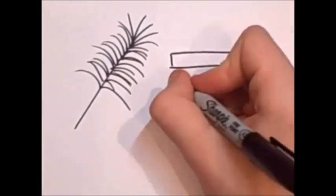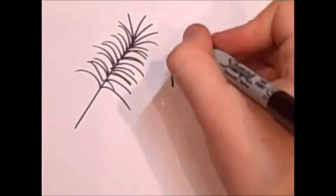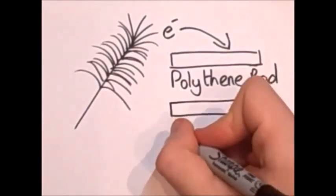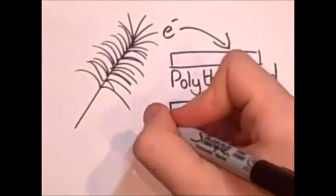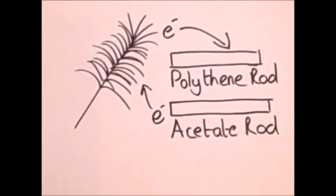For example, a duster. If a duster is rubbed against a polythene rod, all the electrons move from the duster towards the rod. Whereas if it's rubbed against an acetate rod, all the electrons move from the rod to the duster.